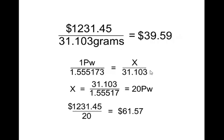And it's a very simple process. You just take one pennyweight, diagonally cross-multiply it with the 31.103, the X with the 1.55173. And to get the X by itself, you simply divide out the 1.55173 out of each side. So that leaves 20 pennyweight to each troy ounce.